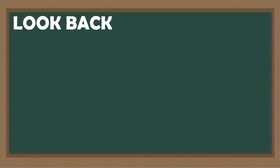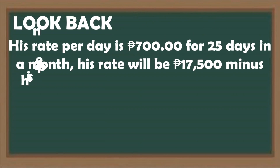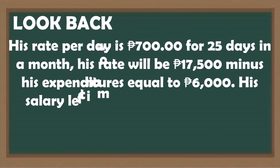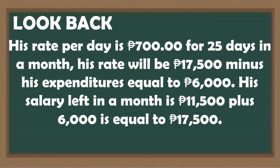Finally, look back. His rate per day is 700 pesos for 25 days in a month, giving 17,500 pesos. Minus his expenditures of 6,000 pesos, his salary left is 11,500 pesos. Checking: 11,500 + 6,000 = 17,500 pesos. Our answer is correct and sensible.